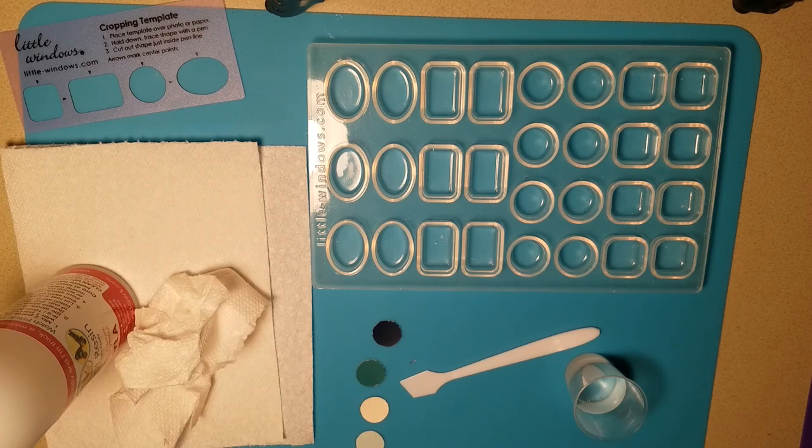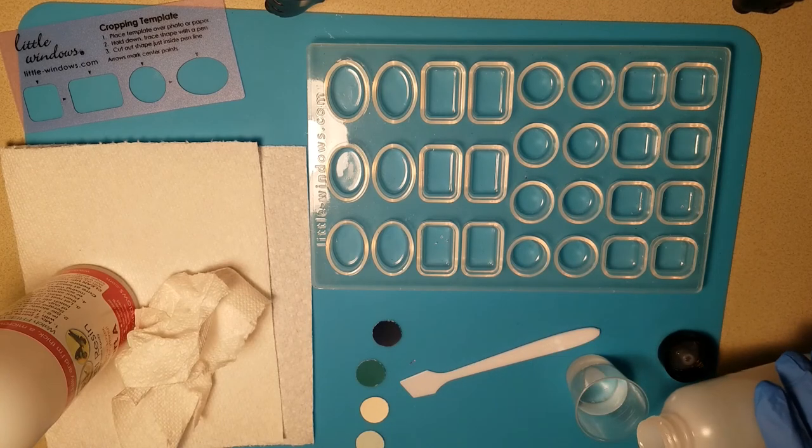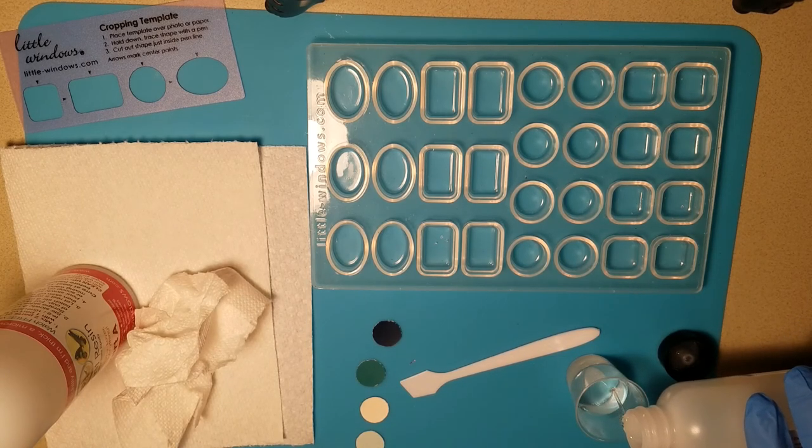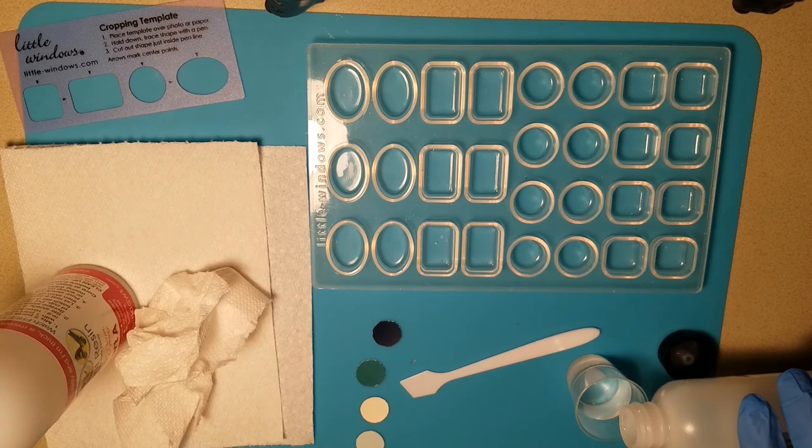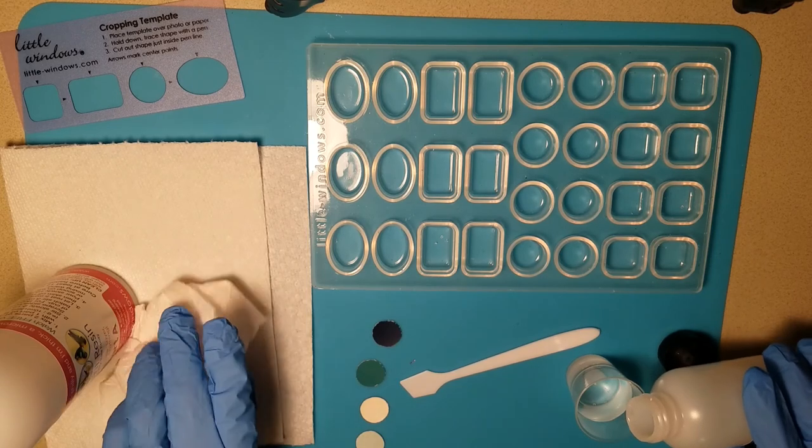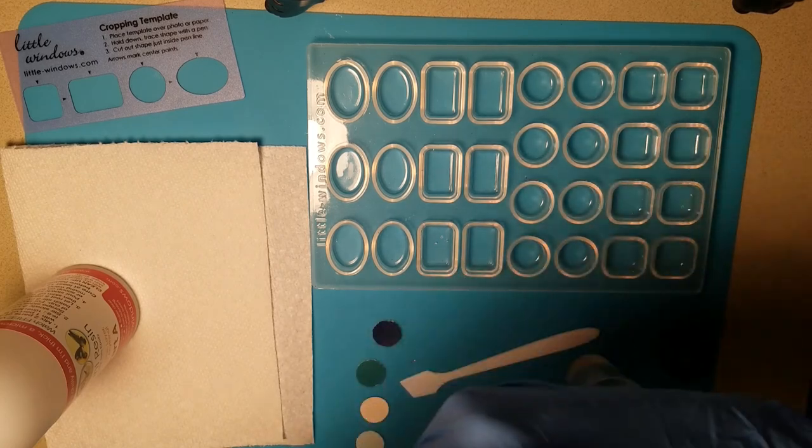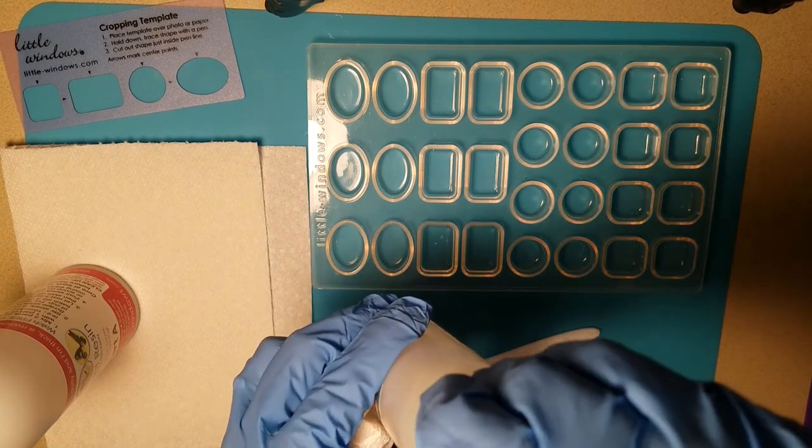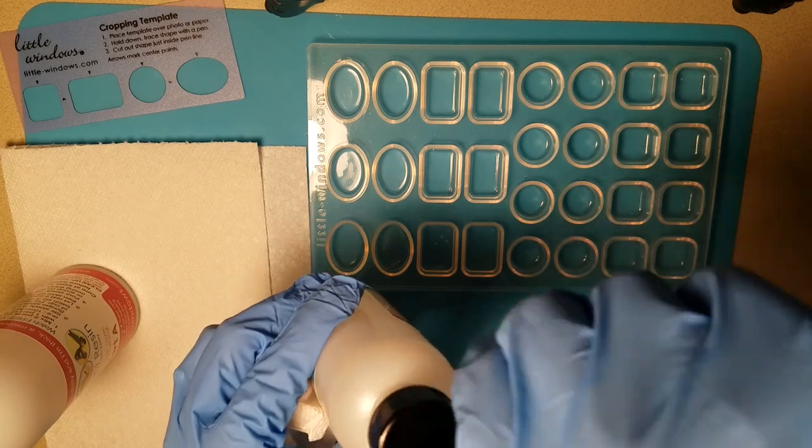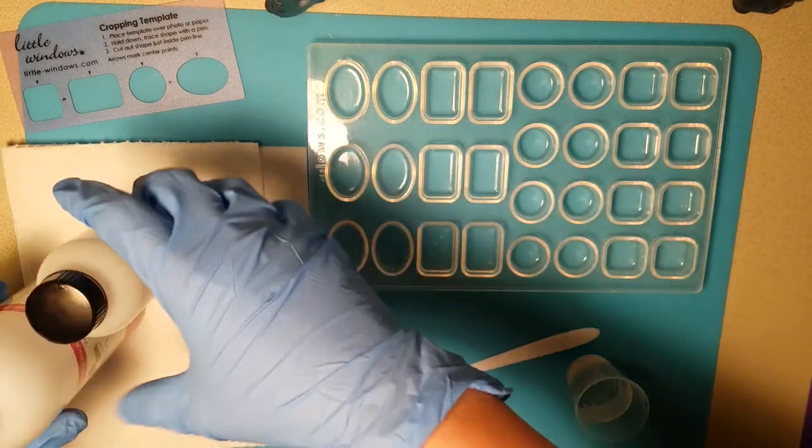So we did ten milliliters of part A. Now we're doing five milliliters of part B to make fifteen milliliters. Same thing with part B. Make sure you're using a different part of your paper towel to wipe the edge of your bottle off so that you can replace the cap without having product on the side of your bottle and gunking it up.